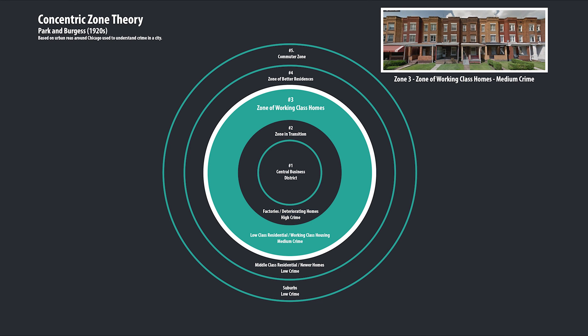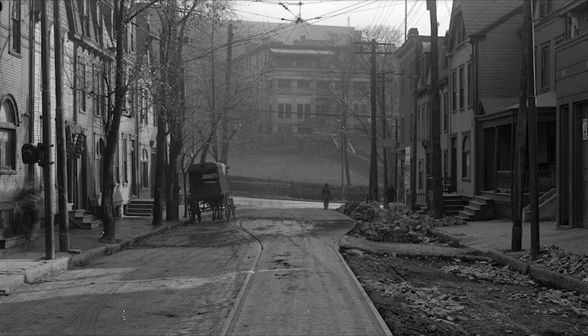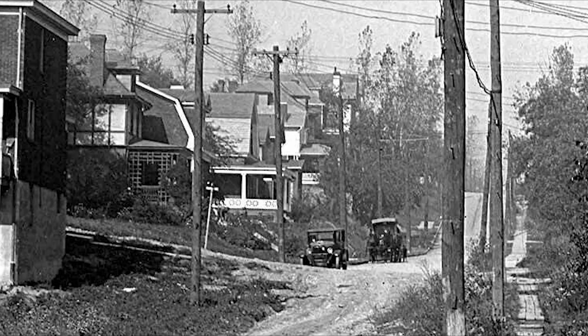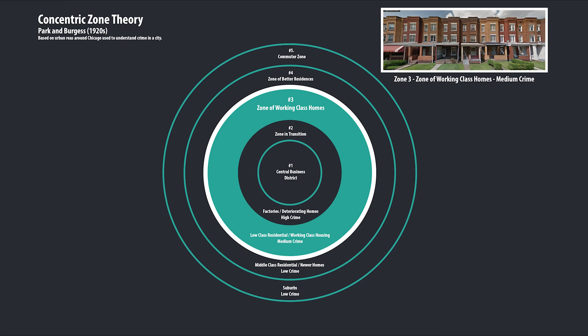Zone three is the zone of the working class homes — low class residential, working class homes. There's medium crime, so there's less crime and a little bit nicer houses. These people were able to escape out of zone two and move into zone three, a little bit nicer of an area, but they're still supporting the factories, steel mills, and warehousing that occurs in zone two, or even the white collar businesses in zone one.